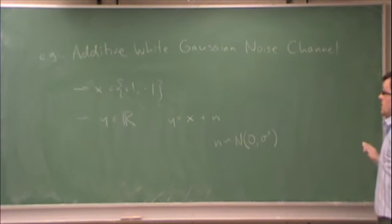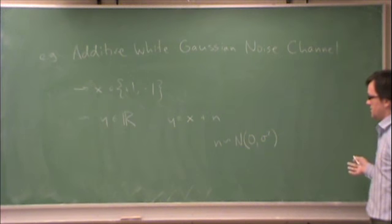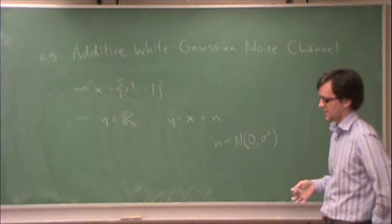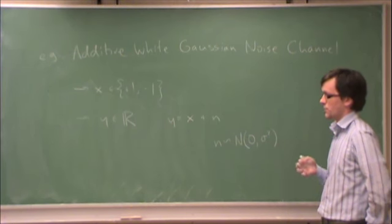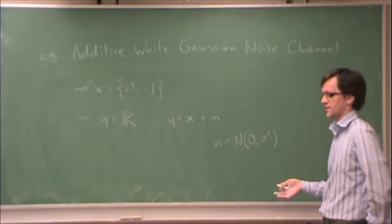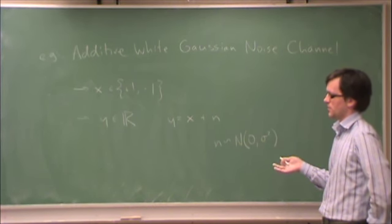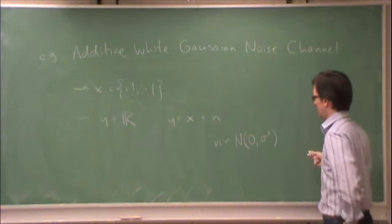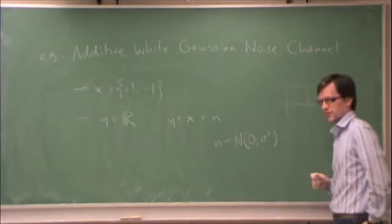But the additive white Gaussian noise channel is everywhere in communications. It's extremely common, and it's common specifically because if you take a very weak signal, as most signals are, you amplify it, and then you look at the amplified output. So for instance, if you send a square wave like this,